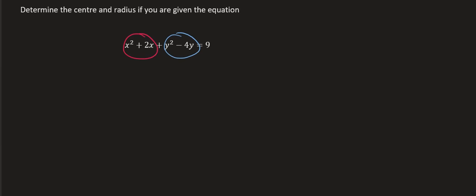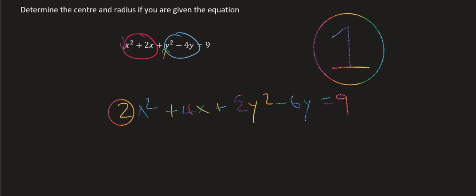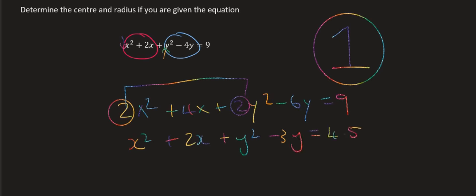Group all the x's together and all the y's together. Make sure that when you do completing the square, the number in front of x squared and the number in front of y squared is a 1 — it has to be a 1, that is very important. If it's not, for example if those two numbers are not 1, you would have to divide by 2. Those two numbers always have to be the same — if they're not, it's not a circle. So divide everything by 2, giving you x squared plus 2x plus y squared minus 3y equals 4.5. Then you can carry on, because those two numbers are now 1.